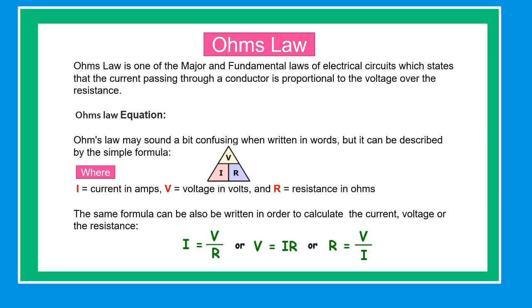Ohm's Law equation. Ohm's Law may sound confusing when written in words, but it can be described by the simple formula: I equals current in amps, V equals voltage in volts, and R equals resistance in ohms. The same formula can also be written to calculate current, voltage, or resistance.